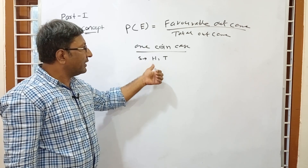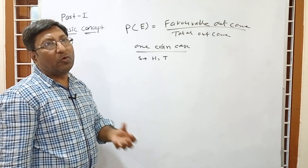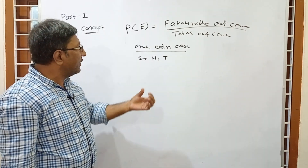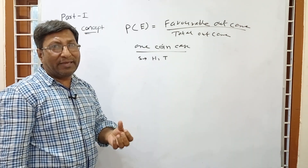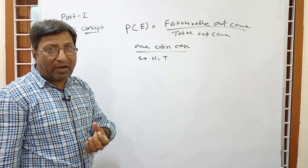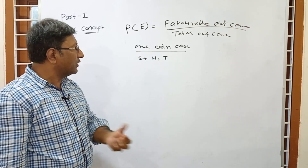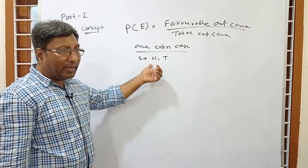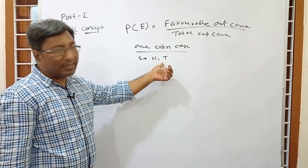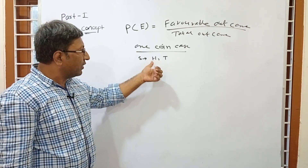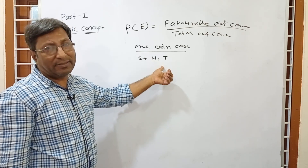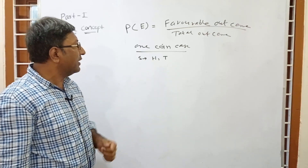When we throw one coin we get a total outcome of 2 — that is, one head or one tail. Head is one outcome and tail is the other outcome.